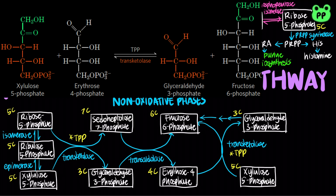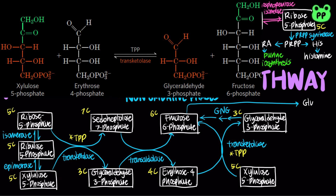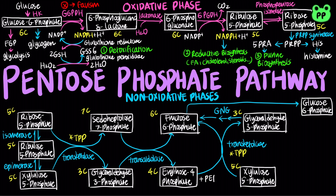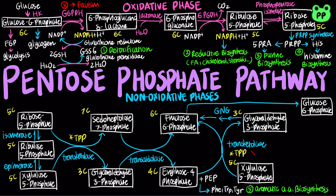Both products can be converted back to glucose 6-phosphate through gluconeogenesis. The intermediate erythrose 4-phosphate can combine with phosphoenolpyruvate to form the aromatic amino acids phenylalanine, tryptophan, and tyrosine.